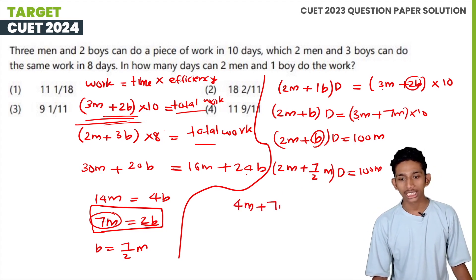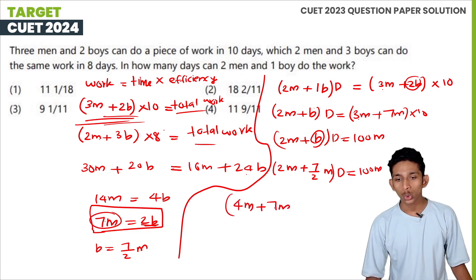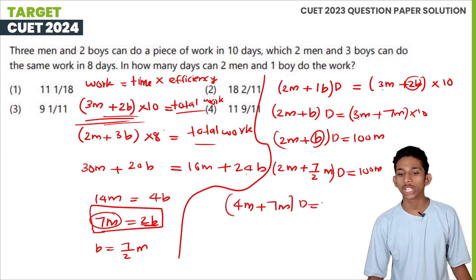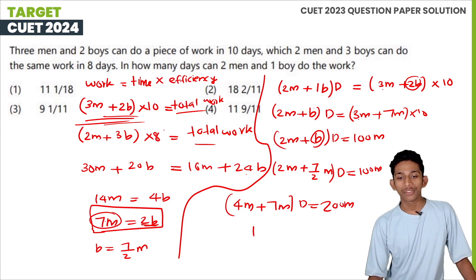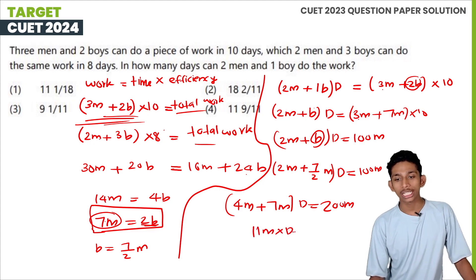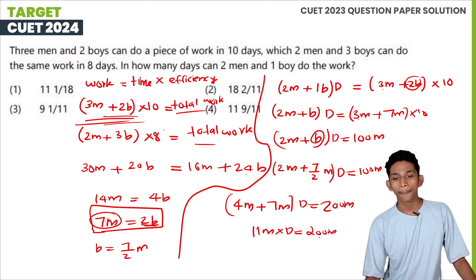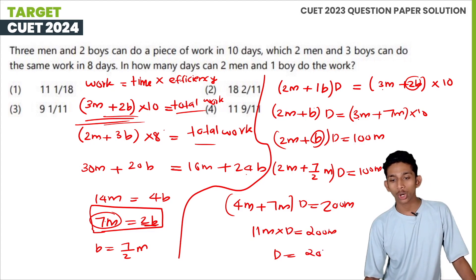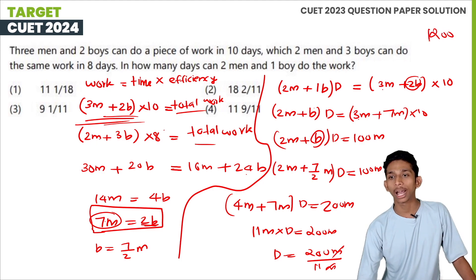Substituting 2b = 7m into the expression for 2m + 1b: total work = (3m + 2b) × 10 = (3m + 7m) × 10 = 100m. Then (2m + 1b) × d = 100m. Since 1b = 7m/2, we get (2m + 7m/2) × d = 100m, so (11m/2) × d = 100m, giving 11m × d = 200m, so d = 200/11 days.